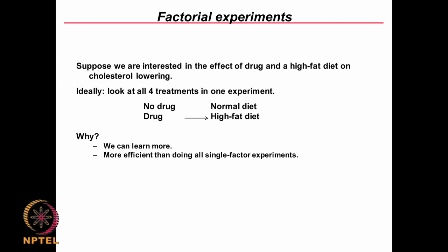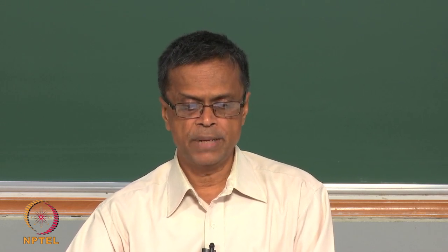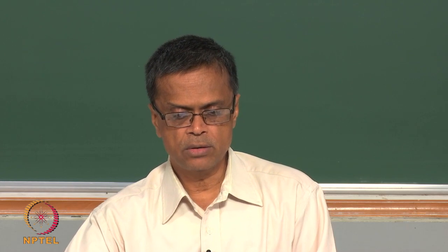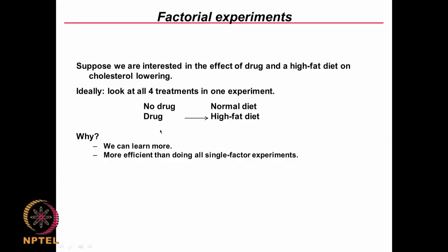We have 2 parameters at 2 levels — 2 into 2 gives 4 experiments. By doing this we achieve many things, because we will be able to see interactions. For example, is there an interaction between drug and diet — does a person taking drug with a high fat diet behave very differently compared to a normal diet or no drug?